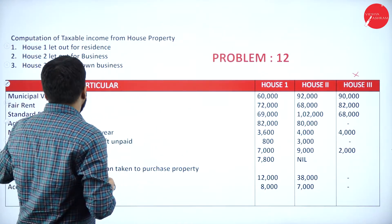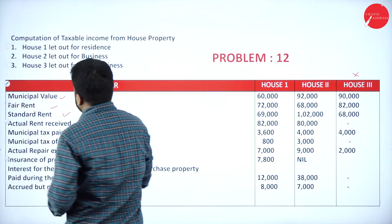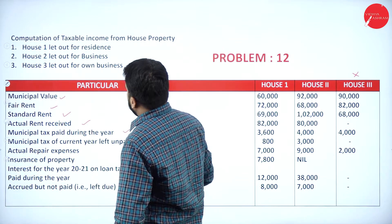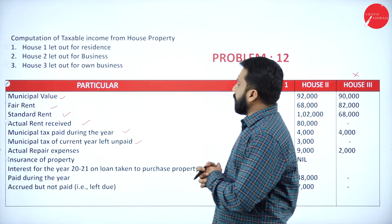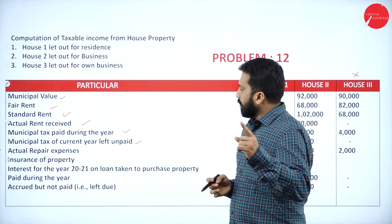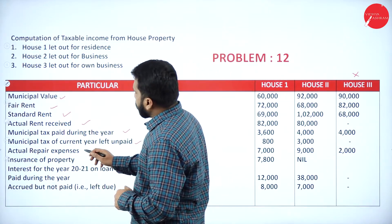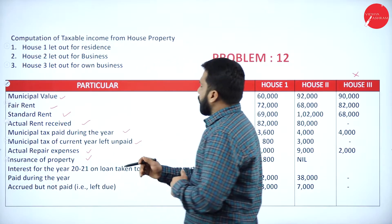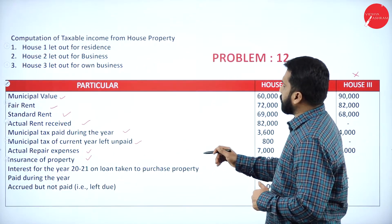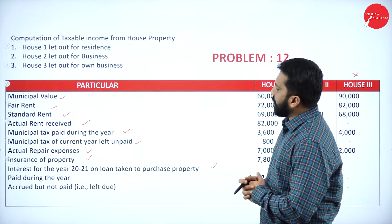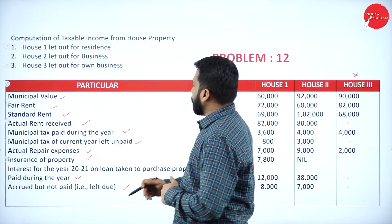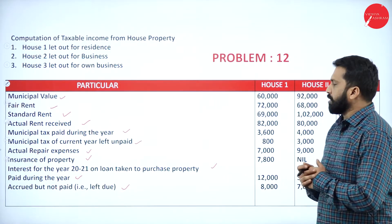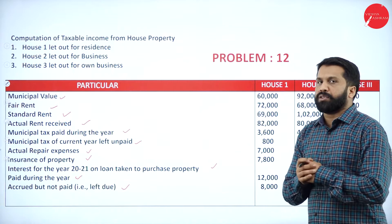We have municipal value, fair rent, standard rent, actual rent, municipal tax paid, and municipal tax of current year left unpaid. Also given are actual repair expenses, insurance of property, interest for the year 2020-21 on loan taken to purchase property paid during the year, and interest accrued but not paid. These are the informations we have in the question paper.